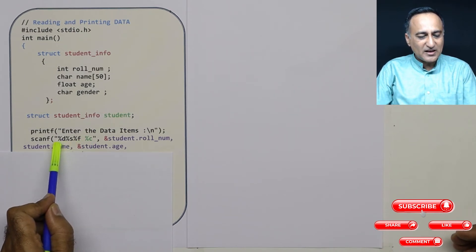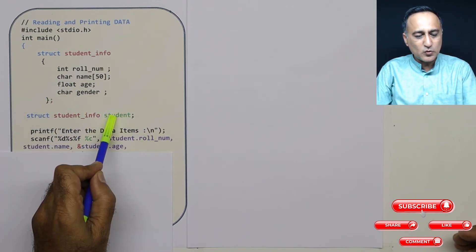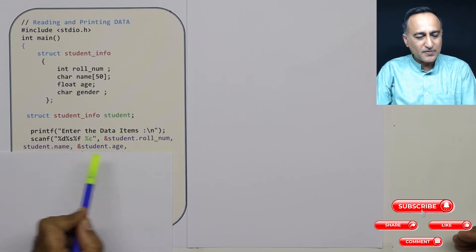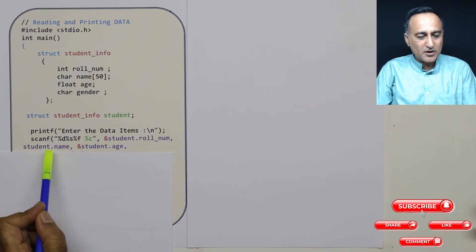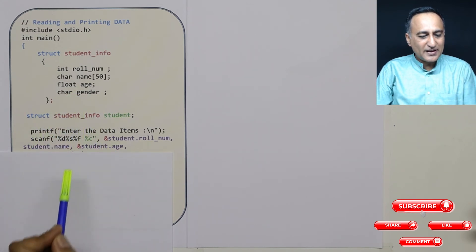For percentage D, instead of directly saying address of roll number, I have to refer roll number through this particular student. So I am saying address of student.roll_num. Name is a string, so it is already an address, so student.name. Age is again a floating point type of data, so it is address of student.age.